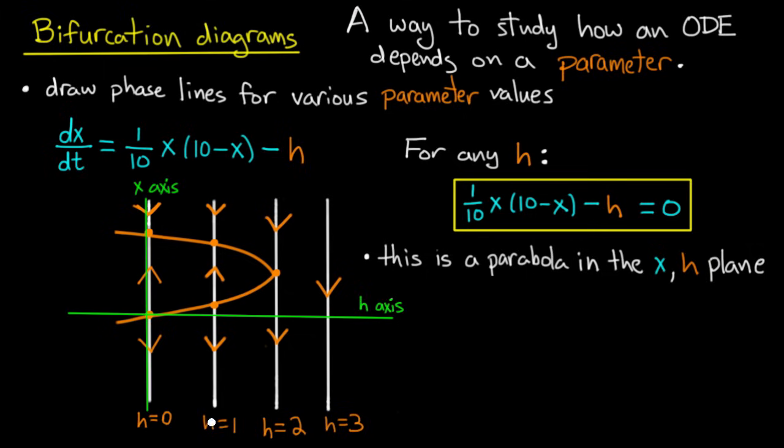make this the h-axis, and these are the various values of h that I've chosen—h equals 0, h equals 1, h equals 2, etc.—and this is the x-axis represented by the vertical position on the phase line, then that's the parabola. It's a sideways parabola given by this equation.